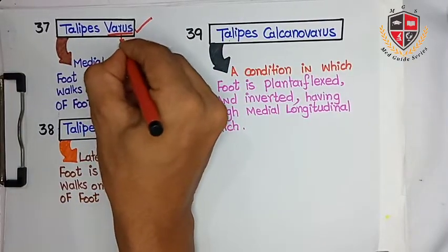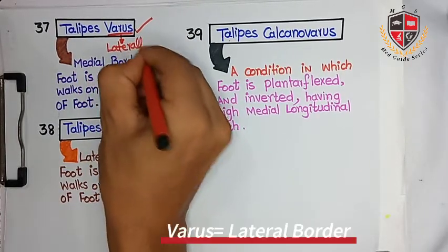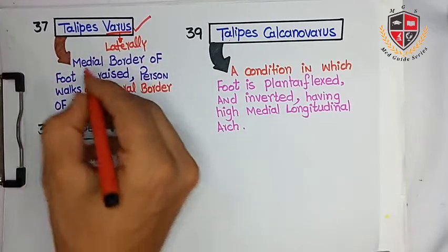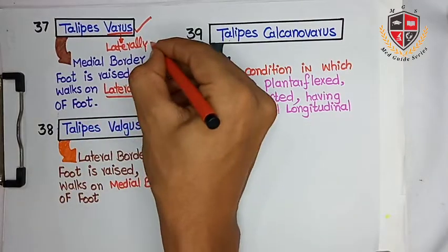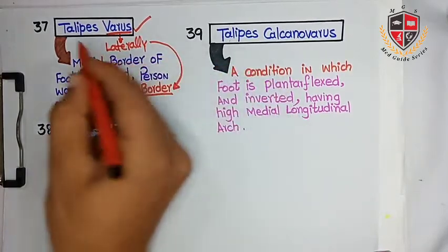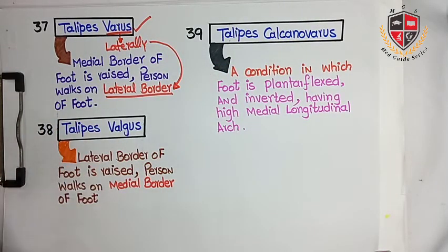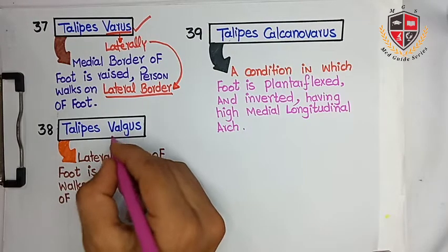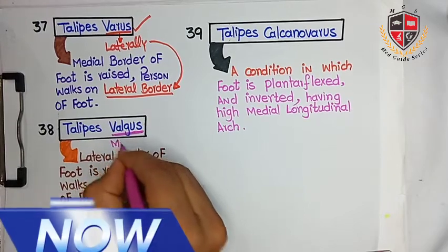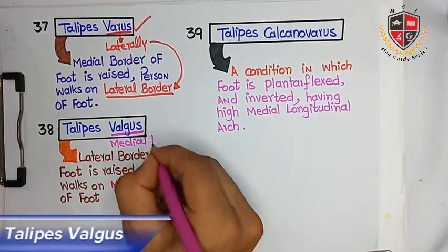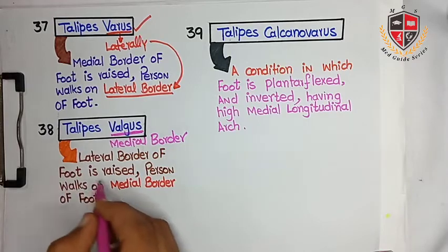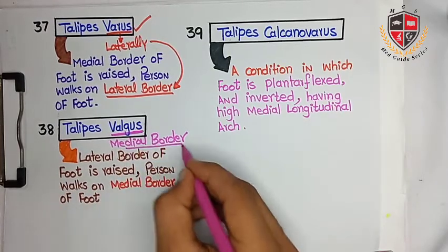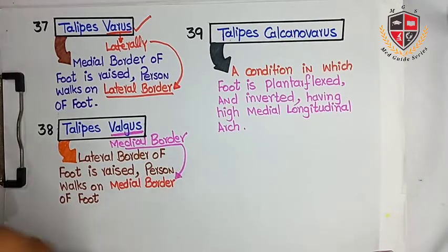The next clinical is talipes varus. In talipes varus the lateral border of the foot is raised and the person walks on the medial border of the foot, so medial border is associated with varus. The next clinical is talipes valgus, where the medial border of the foot is raised and the person walks on the lateral border of the foot.